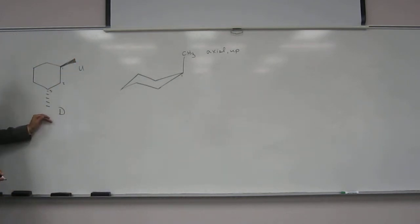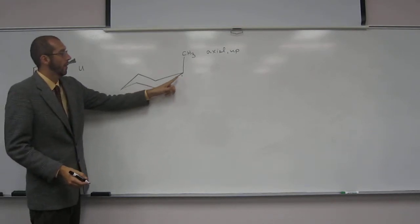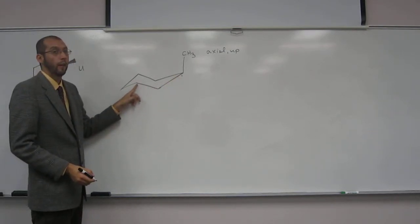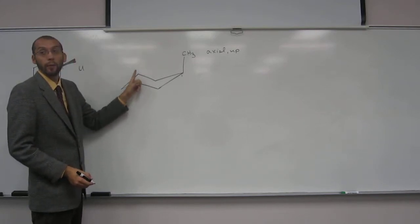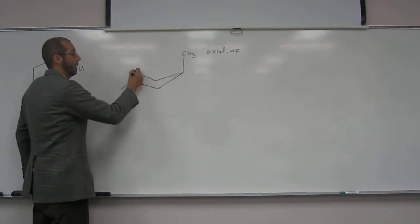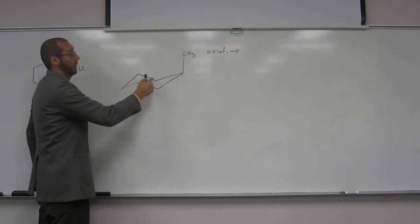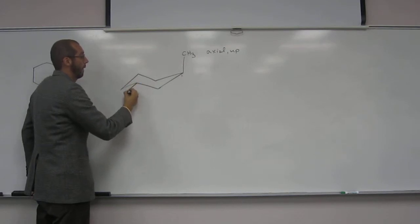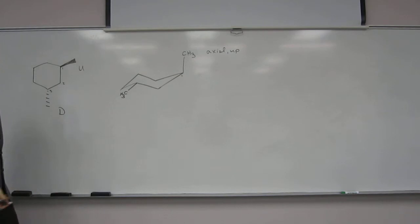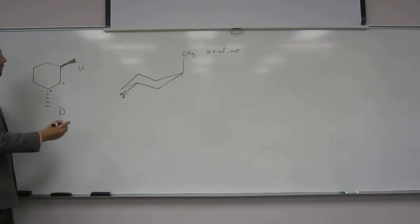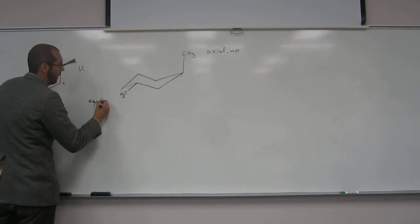What about here? 3 is going to be down, and over here, 1, 2, 3, it's going to be equatorial down, right? Because axial is up there, right? So the hydrogen would be there. This is going to be parallel to that line there, or that line there, right? So the methyl group is going to be, what did we say? Equatorial. Equatorial.